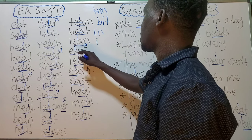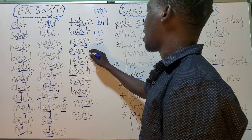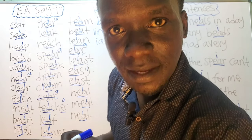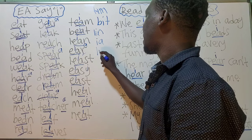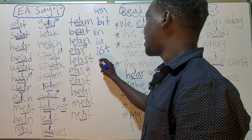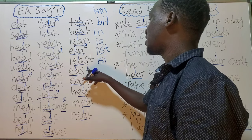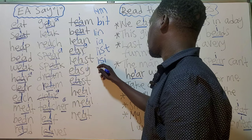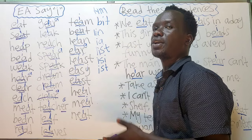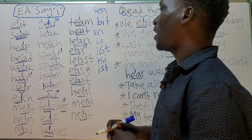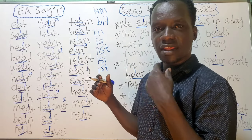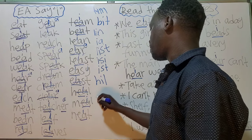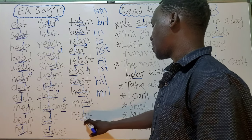Here the R becomes an E sound. And this one — not 'last' but 'least.' Then 'easy' — this Y will also change into the E sound. And here we have 'east.' It's only a sound change, not a writing change — you just write them as they are, but when it comes to reading, things change. And then this one is 'meal,' and this one is 'neat.'